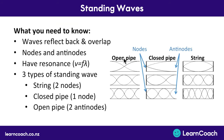To summarize the three different types of standing waves: an open pipe has an antinode at both ends; a closed pipe has a node at one end and an antinode at the other end; and a string has a node at both ends. These are the three types we'll look at in more detail in the next video.